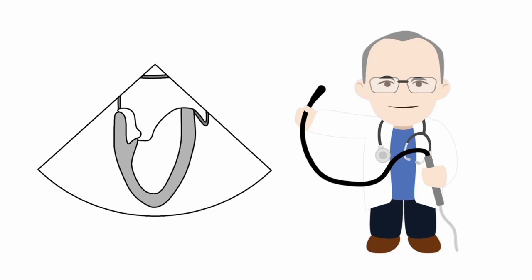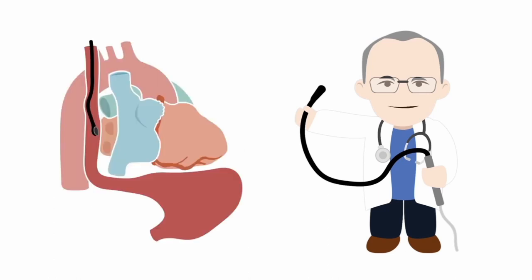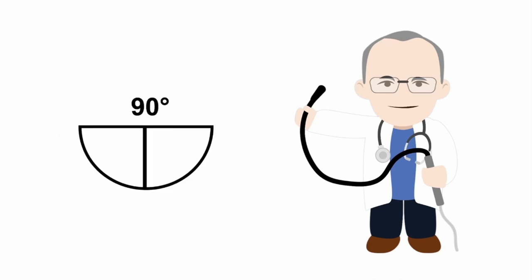The anatomy of the left atrial appendage is quite variable, and so the transducer angle at which it is best seen can be quite variable too. Nonetheless, the common feature of all left atrial appendage views is that they're obtained at the mid-esophageal level. I'd suggest starting your search with a transducer imaging plane angle of approximately 90 degrees — somewhere in the region of 90 to 110 degrees will usually be a good starting point.